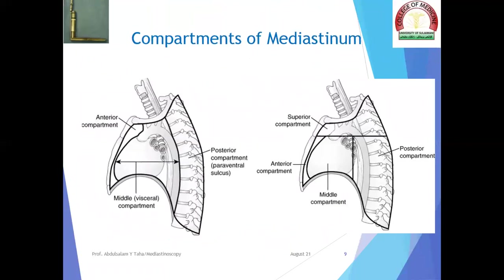In this slide, we can see two models of dividing the mediastinum. On the left side, the mediastinum is divided into three compartments: the anterosuperior in the front of the heart, the middle compartment containing the heart and pericardium, and the posterior compartment in the form of the paravertebral sulci. On the right side, the mediastinum is divided into superior and inferior compartments, with the inferior further subdivided into anterior, middle, and posterior divisions.